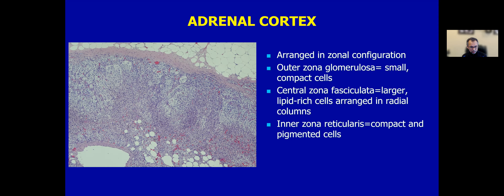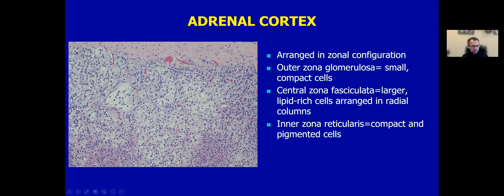Our first question: am I dealing with an adrenal cortical pathology? It is very important to understand the normal histology of the adrenal cortex, which is arranged in a zonal distribution. There are three zones: the outer zona glomerulosa, composed of small, compact cells; the bulk zone of clear, bubbly, vacuolated cells known as zona fasciculata, which are lipid-rich; and then the inner zona reticularis cells, which are compact and pigmented.